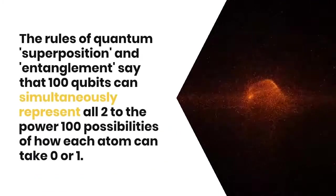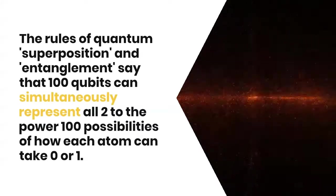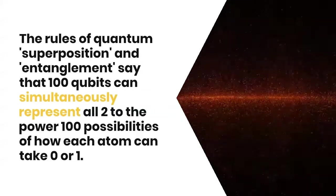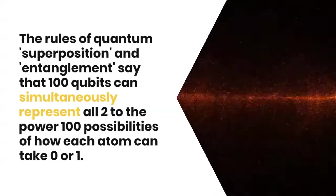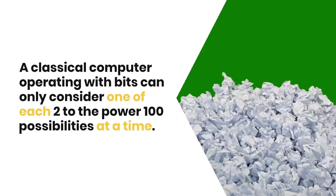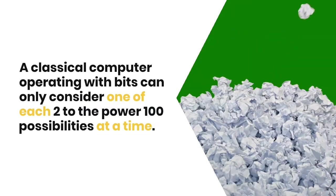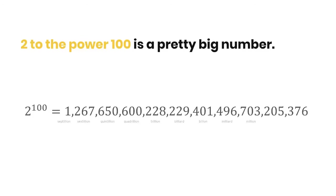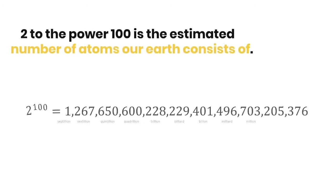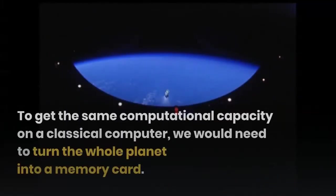The rules of quantum superposition and entanglement say that 100 qubits can simultaneously represent all 2 to the power of 100 possibilities of how each atom can take zero or one — all of these possibilities, all at the same time. A classical computer operating with bits can only consider one of each 2 to the power of 100 possibilities at a time. Two to the power of 100 is the estimated number of atoms our Earth consists of. To get this same computational capacity on a classical computer, we would need to turn the whole planet into a memory card.